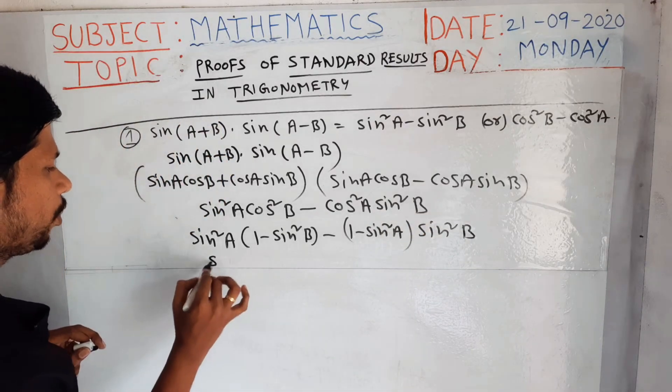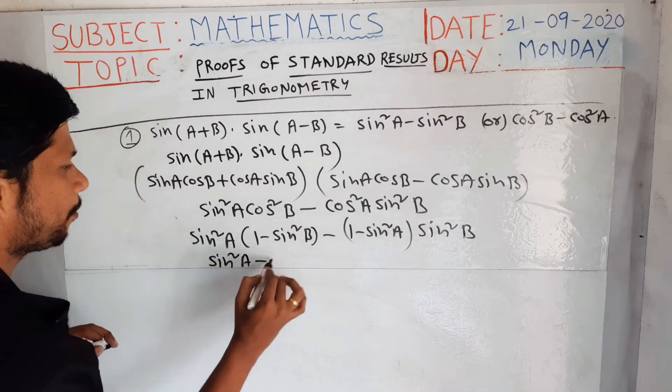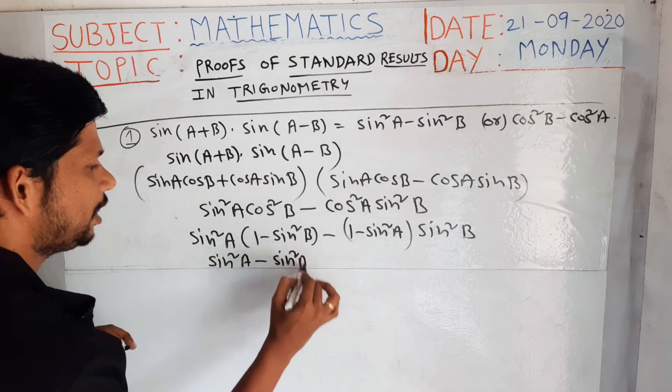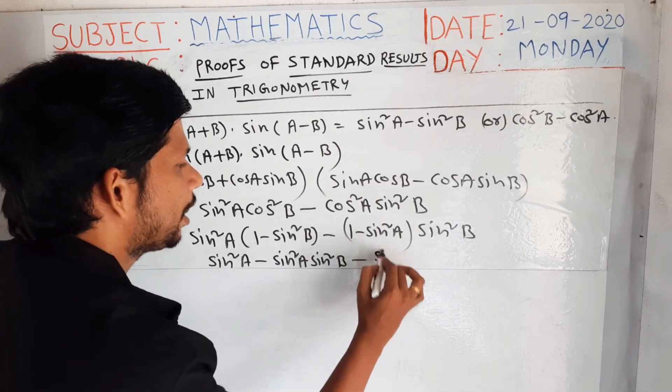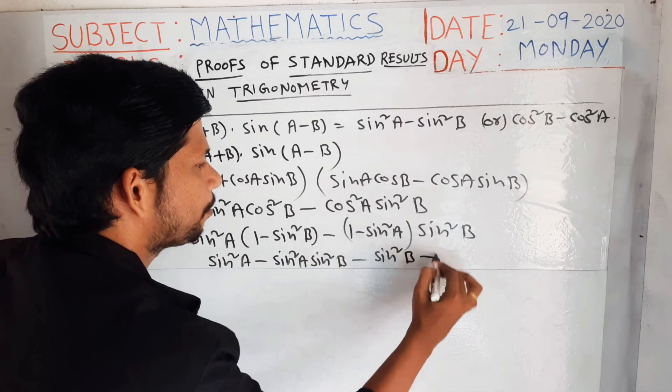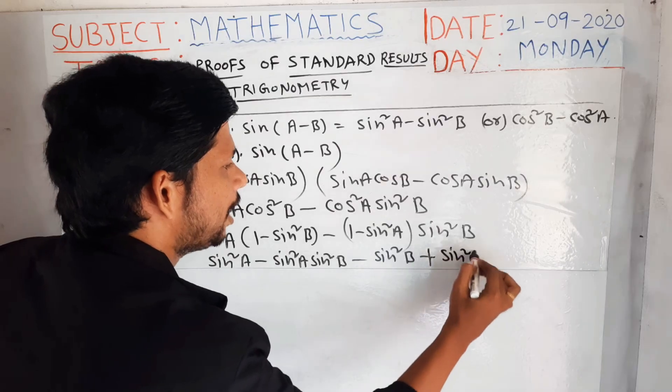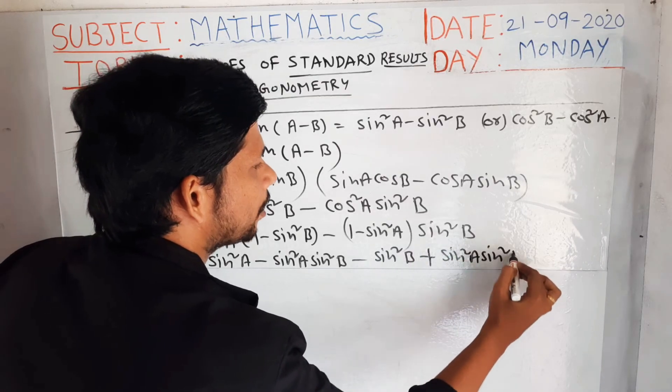So now multiply: sin²(a) - sin²(a)sin²(b). After that, if you multiply the second term: -sin²(b) + sin²(a)sin²(b).